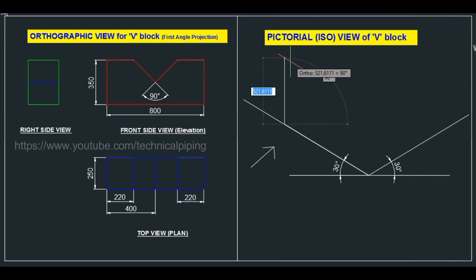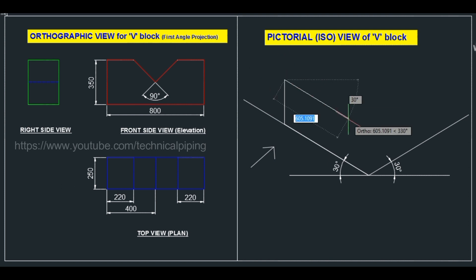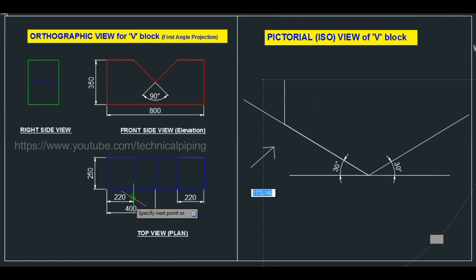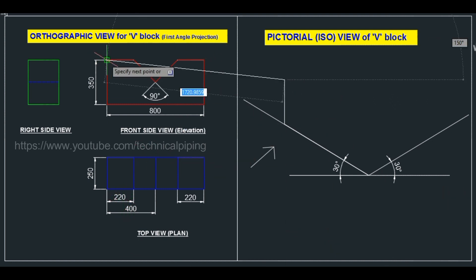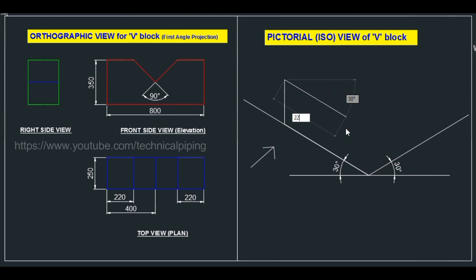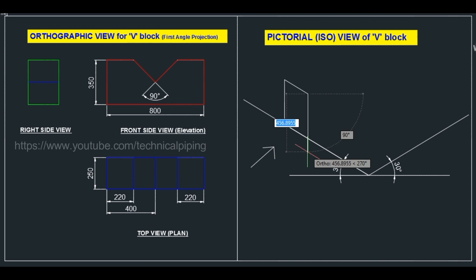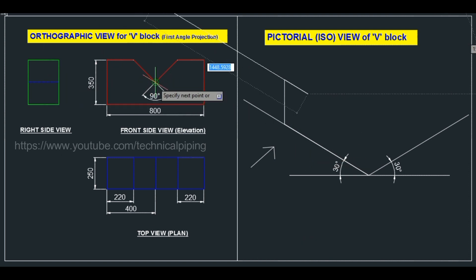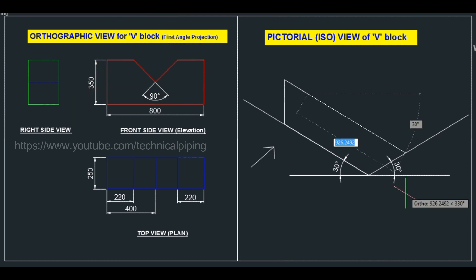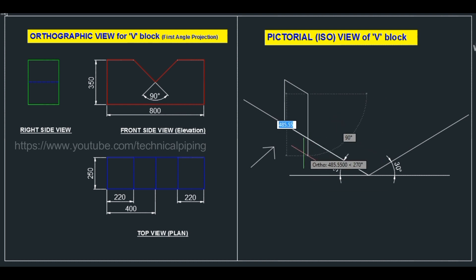Draw horizontal 800 mm and vertical 350 mm, then mark 220 mm on each side. The center is marked, and from here the depth of the V-block is 350 divided by 2, which is 175 mm.